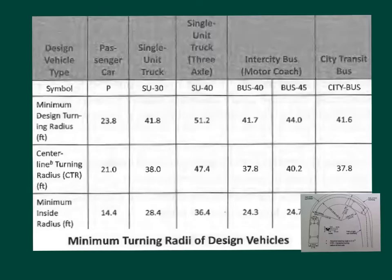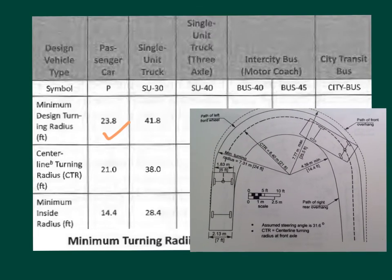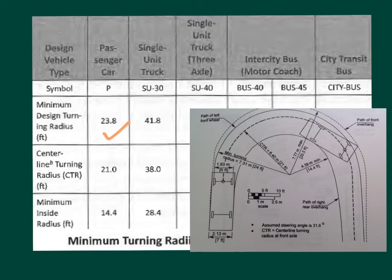Critical radii of select design vehicles are conveniently tabulated in look-up tables. Here we find that the minimum design turning radius for the passenger car is just under 24 feet. We need to remember that this minimum pertains to the path of the left front wheel — it could be considered the minimum outside radius. The associated centerline turning radius is smaller, and the inside radius is even smaller than that.